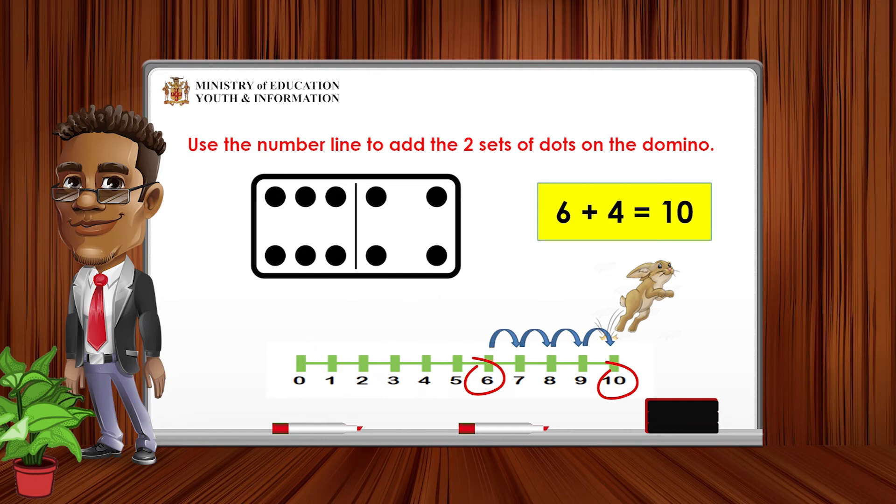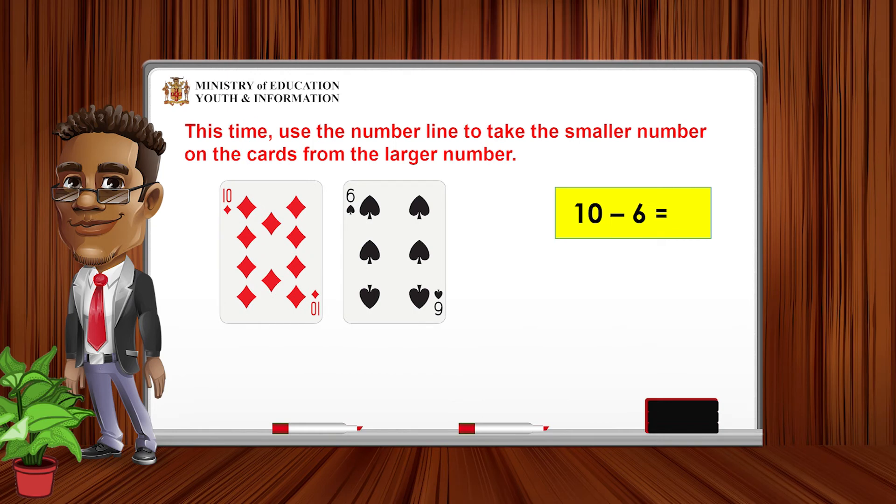Let us have another go at using the number line. Look at the numbers on the cards. The first card has the number 10. Very good! And the next card has the number 6. Okay, we are going to be using the number line to subtract the smaller number, which is 6, from the larger number, which is 10. Because we are subtracting, we will be jumping backwards. So we will be jumping 6 places backwards because we are subtracting 6 from 10. So if we start at the number 10, then jump 6 places backwards, where would we land? We would land on the number 4. Very good everyone! So 10 subtract 6 equals 4.